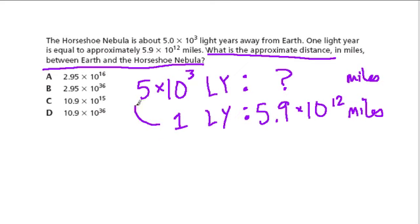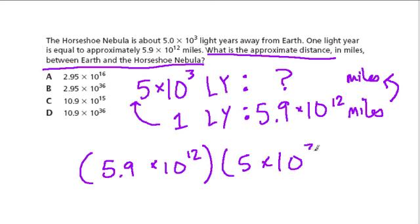To go from one light year to this, I have to multiply 1 by 5 × 10³. So to keep this relationship proportional, I have to multiply 5.9 × 10¹² by 5 × 10³.